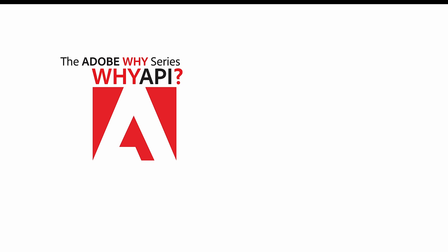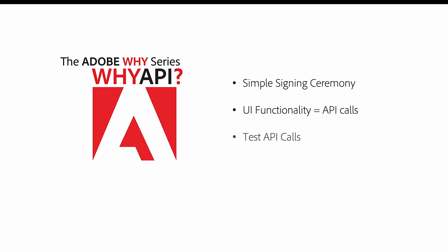In this video, I want to put some of our Acrobat Sign API calls to work, showing you how they work and giving you the ability to use our API to integrate within a widget you're building. I'll show you a simple signing ceremony — I'll send an agreement out for signature and collect legal signatures from within the Acrobat Sign UI. Then I'll show you how that specific functionality relates to specific API calls, where you can test our APIs, and where you can get a free developer account.